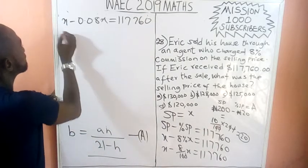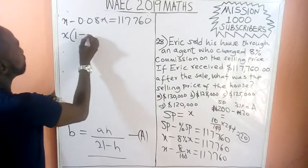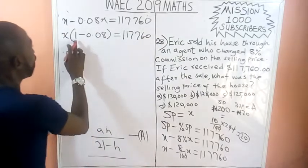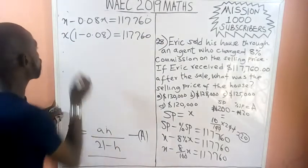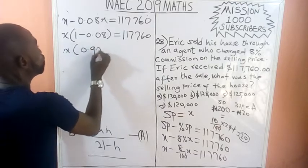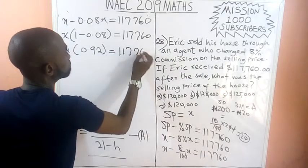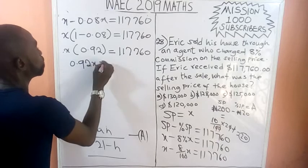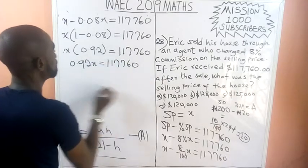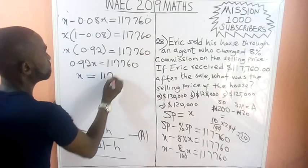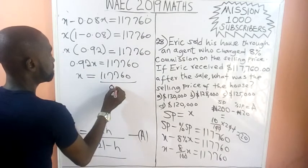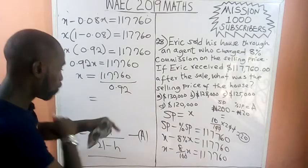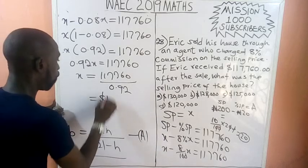X is common, so I bring x out: x times open bracket 1 minus 0.08 close bracket equals 1,177.60. That gives us 0.92x equals 1,177.60. Dividing both sides by 0.92: x equals 1,177.60 divided by 0.92, which equals $1,280.